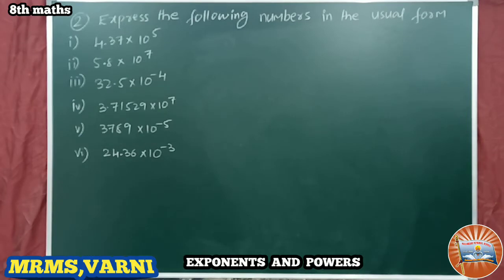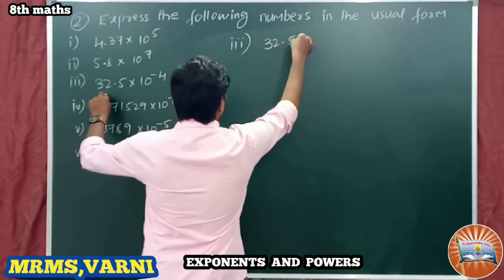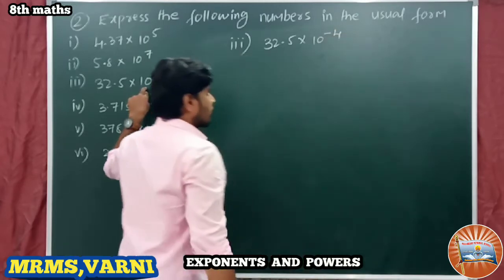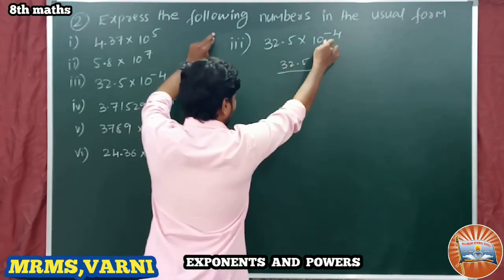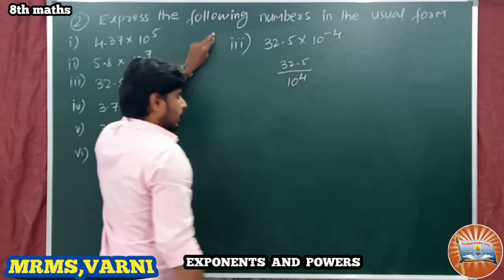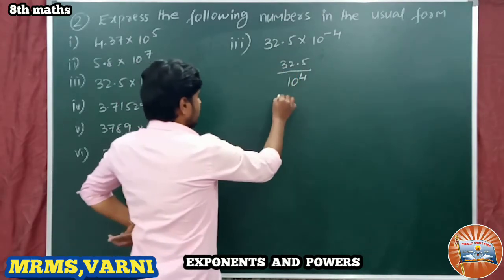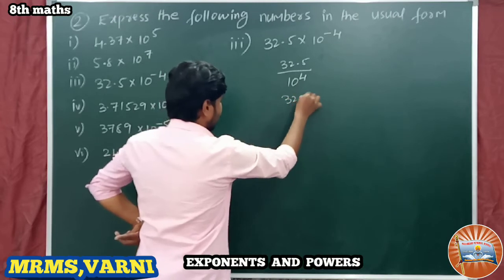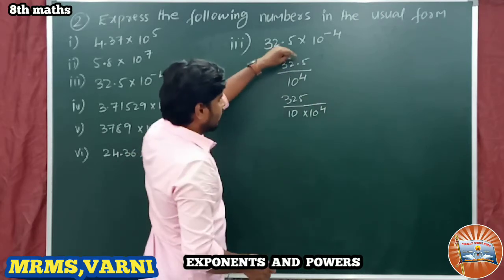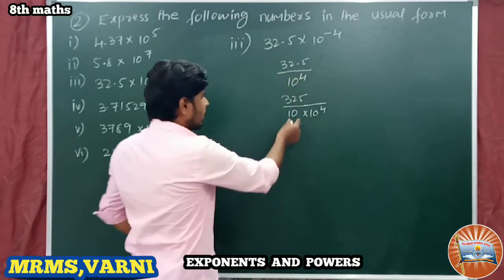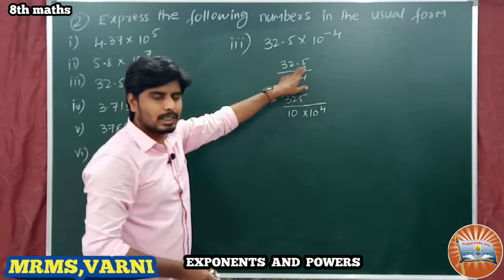Next, row number 3: 32.5 into 10 power minus 4. So 32.5 into 10^(-4) we can write as 32.5 divided by 10^4. Now 32.5 we can write as 325 divided by 10, into 10^4 as it is. Instead of writing 32.5, I am writing 325 and taking 10 in the denominator — removing the decimal point, we write 1/10 for one decimal place.